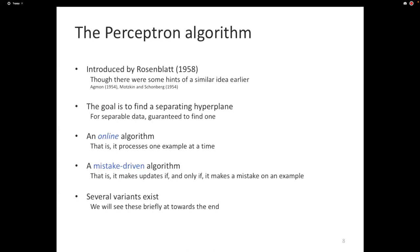In the context of what we've seen, the perceptron is an online, mistake-driven algorithm. It encounters one example at a time, makes a prediction, and only after making a prediction does it reach for the true label. If the true label differs from the prediction — a mistake — it makes an update. Given how old it is, there are numerous variants of the perceptron. The perceptron is essentially a black box that, given a linearly separable dataset, will find a separating hyperplane.